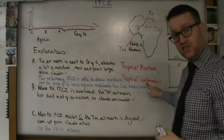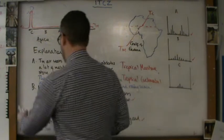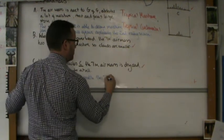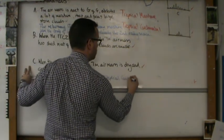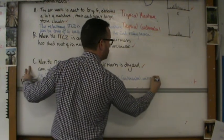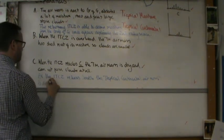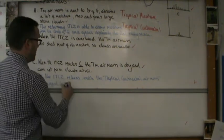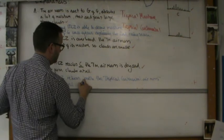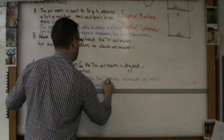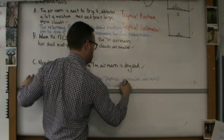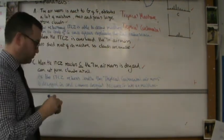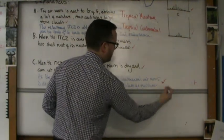And TC, tropical continental, is warm and dry. So as the ITCZ returns south, the tropical continental air mass is dragged in and causes drought. And because it is so dry, because it has no moisture...